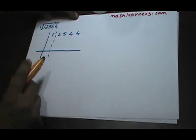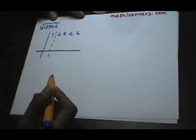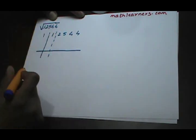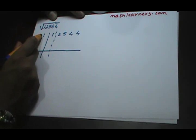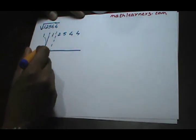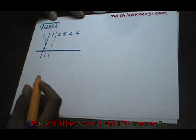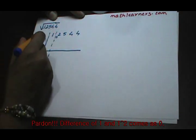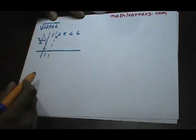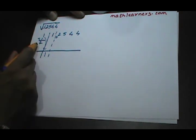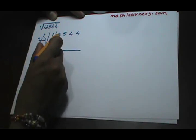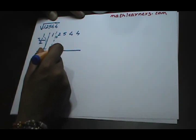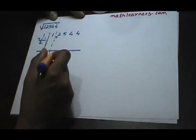In the first column we have 1. We want to find a number whose square is less than or equal to 1. The square root of 1 is 1, so we write 1. We write that same value in the first column. The difference of 1 and 1 is 0. This 1 is doubled to get 2, which will act as our divisor. 2 divided by 2 gives quotient 1 and remainder 0.